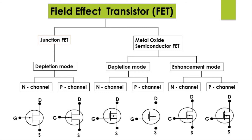Coming to MOSFET, we have two modes: depletion mode MOSFET and enhancement mode MOSFET. Similar to JFET, in depletion mode we have N-channel MOSFET and P-channel MOSFET. Here is the circuit symbol for N-channel MOSFET showing drain, gate, and source. And this is the symbol for P-channel MOSFET, also showing drain, gate, and source. The direction of the arrow indicates the difference between N-channel and P-channel.